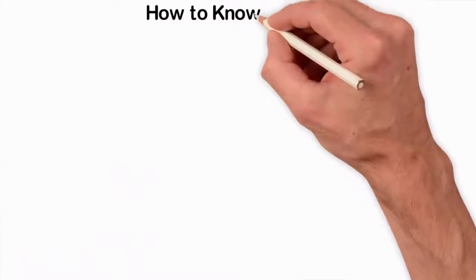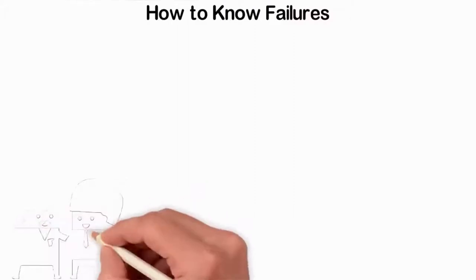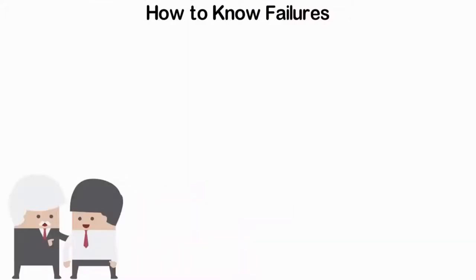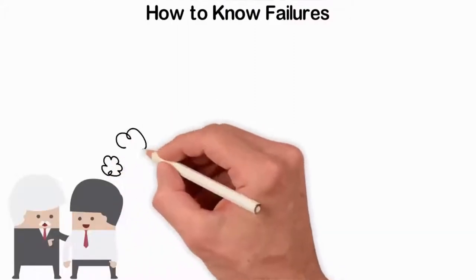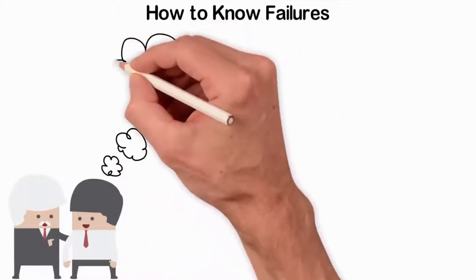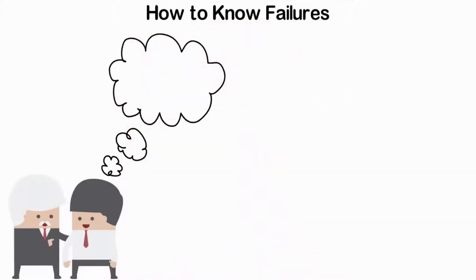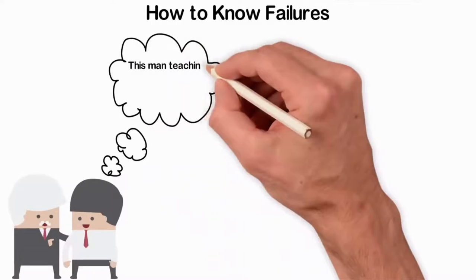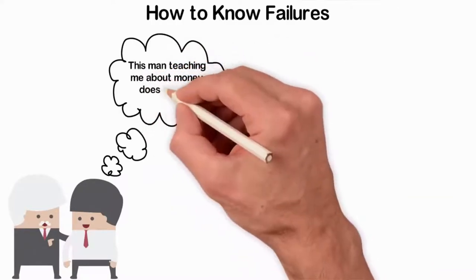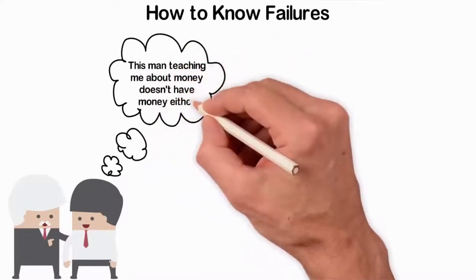So, how can you know failures? Sometimes it's very obvious, usually for those guys who are already old. If, for example, a 65-year-old poor uncle is advising you about money, it's obvious that he's broke, and believe me, people who are broke at such age aren't qualified to teach anyone about money.